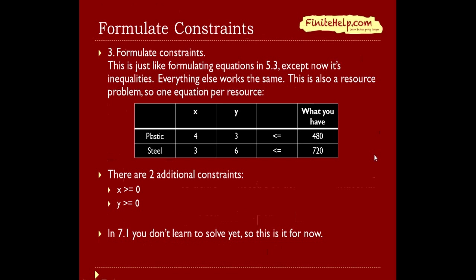The third step is to formulate the constraints. This is just like formulating equations in 5.3, except now it's an inequality because we're not using it all up — we just have to not use more than what we have. This is a resource problem, and we get one equation per resource: plastic and steel. Each car (x) takes 4 ounces of plastic and 3 ounces of steel. Each truck (y) takes 3 ounces of plastic and 6 ounces of steel. The amount of resource used has to be less than or equal to what you have — 480 ounces of plastic and 720 ounces of steel.